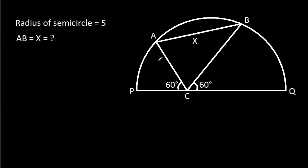In this video, we have been given that angle ACP is 60 degrees, angle BCQ is 60 degrees, and the radius of the semicircle is 5, and AB is X. We have to find X.